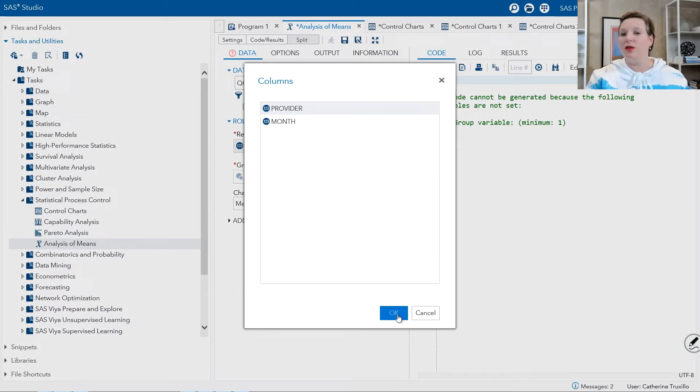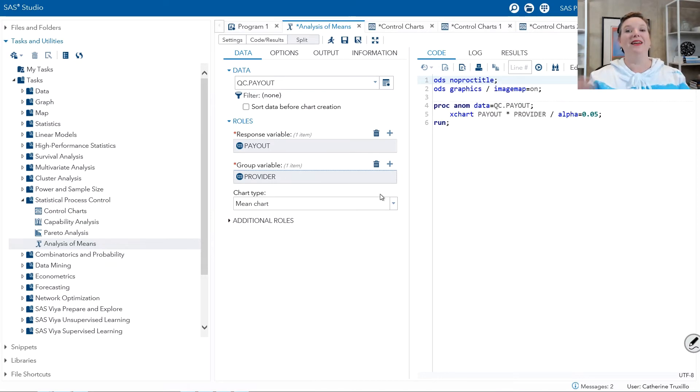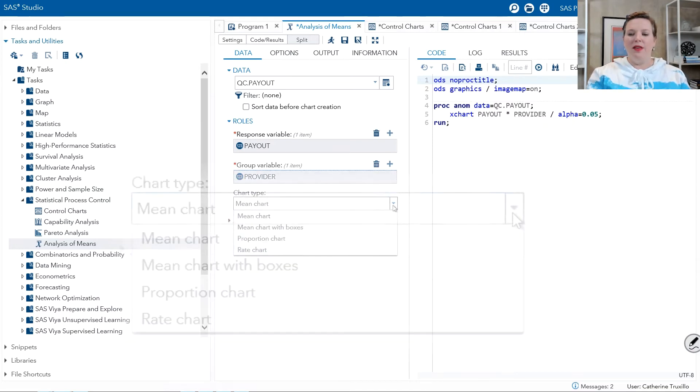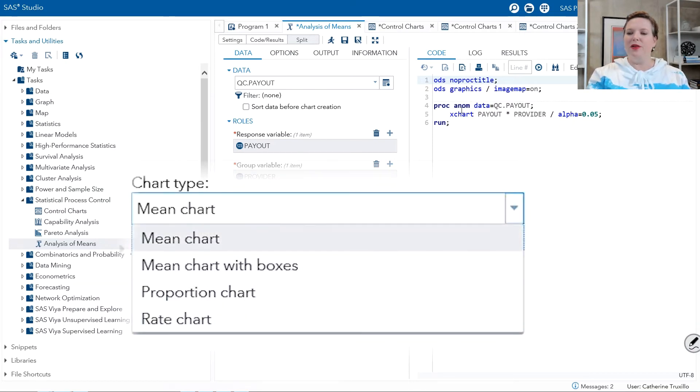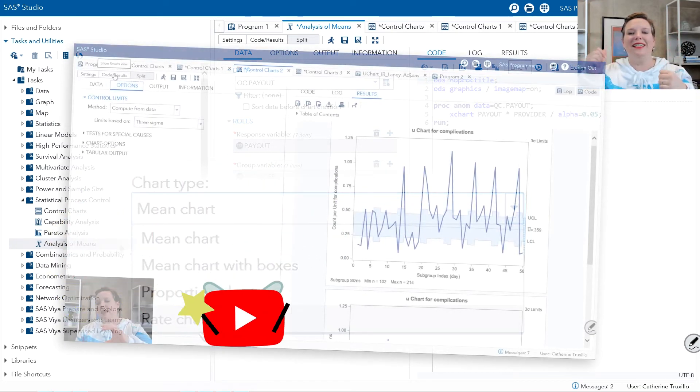Now, we do have months, so we could also look at this in terms of control charts, but we're going to look at this in terms of providers, and we're going to see if there are some providers who are getting significantly more payout than the grand mean or significantly less. There are several chart types available, and notice it's just generated our PROC ANOM code with an X chart statement. X chart is the default. That's the mean chart, but it also has the proportion chart, the P chart, and the rate chart, which is a C chart, and you may have seen those in some of our other videos, and maybe the YouTube fairies will put links to those magically somewhere on the screen. So, there's also mean charts with boxes so that you can see that variability within each group.